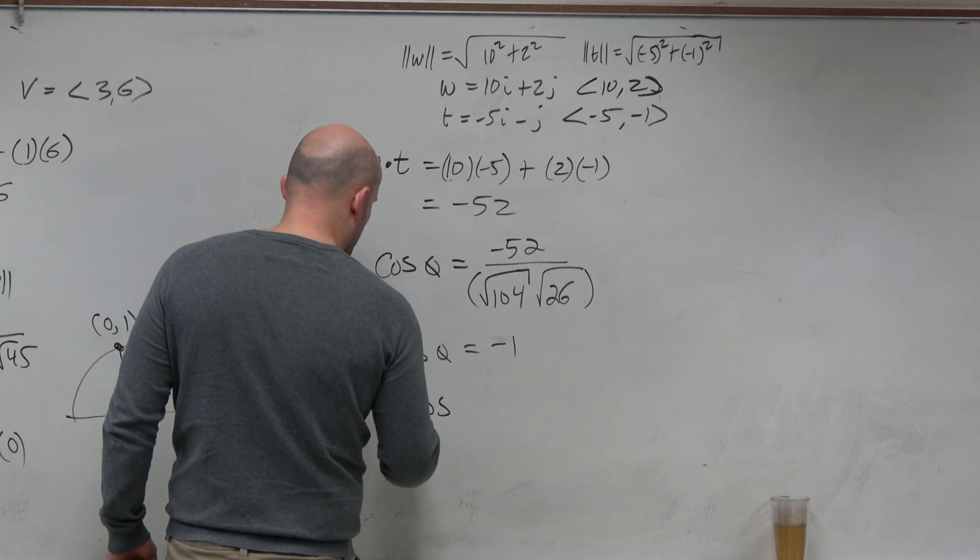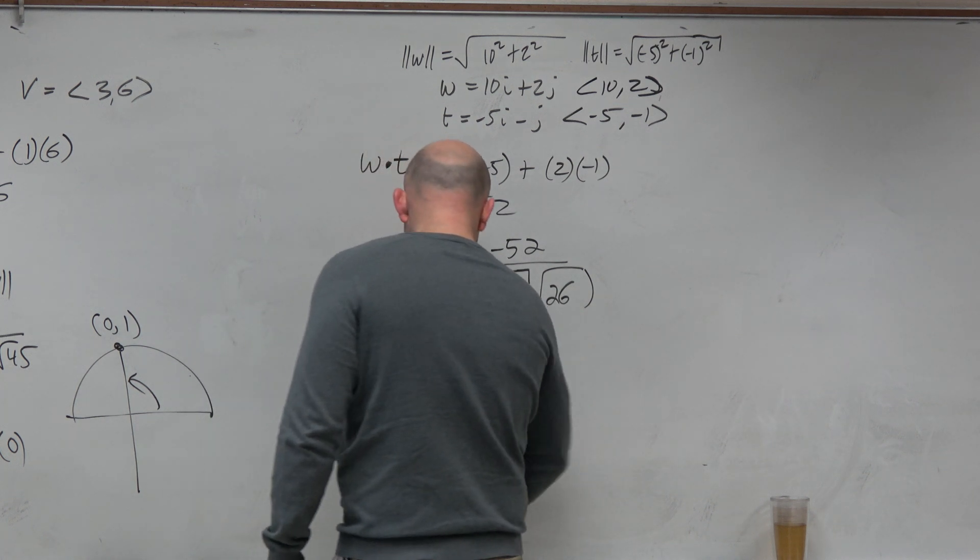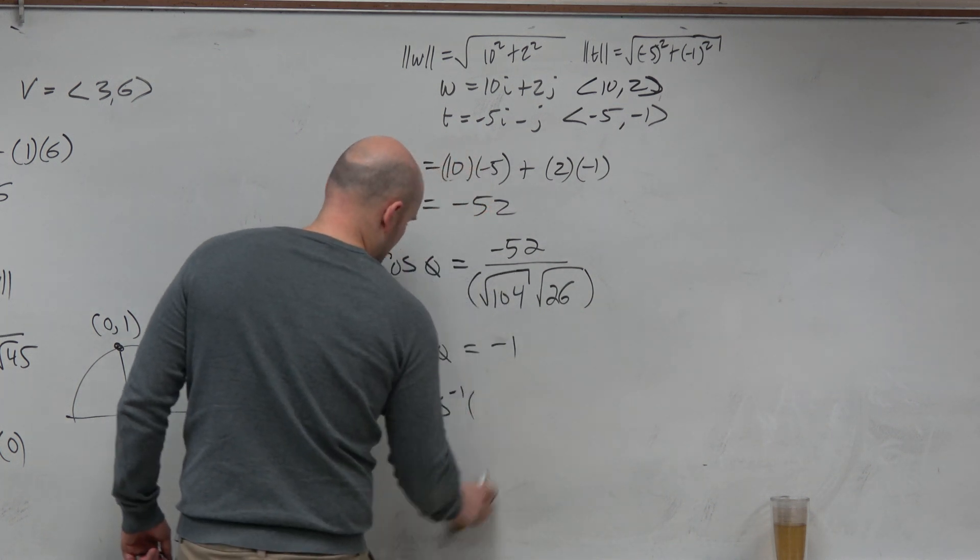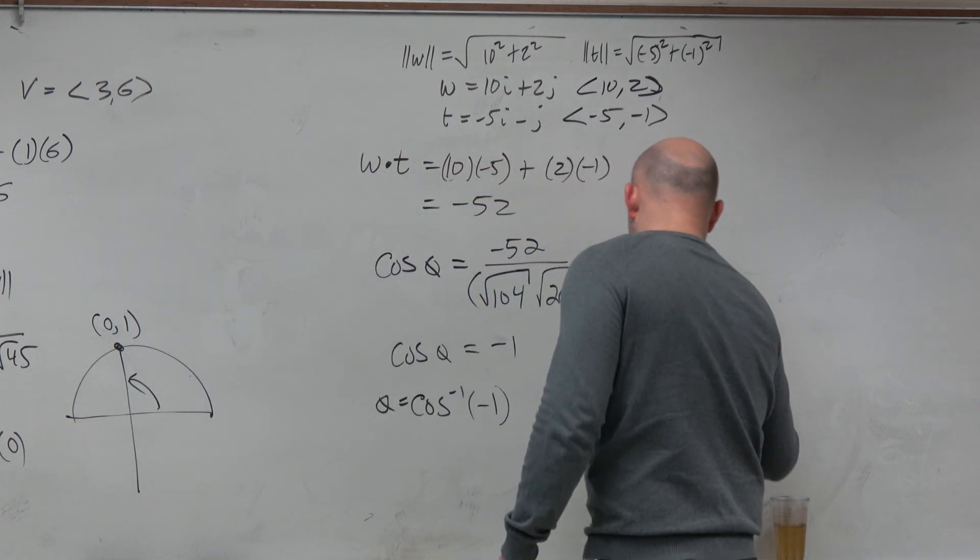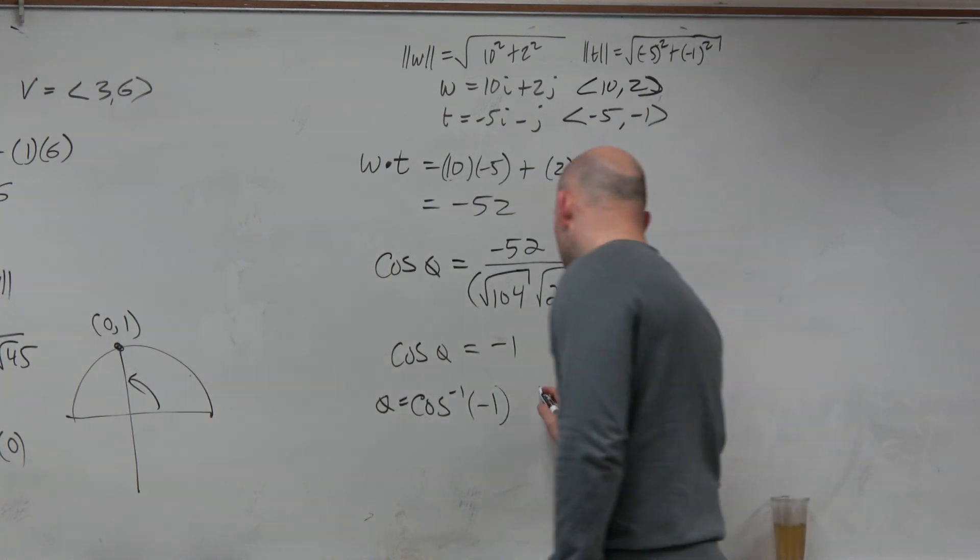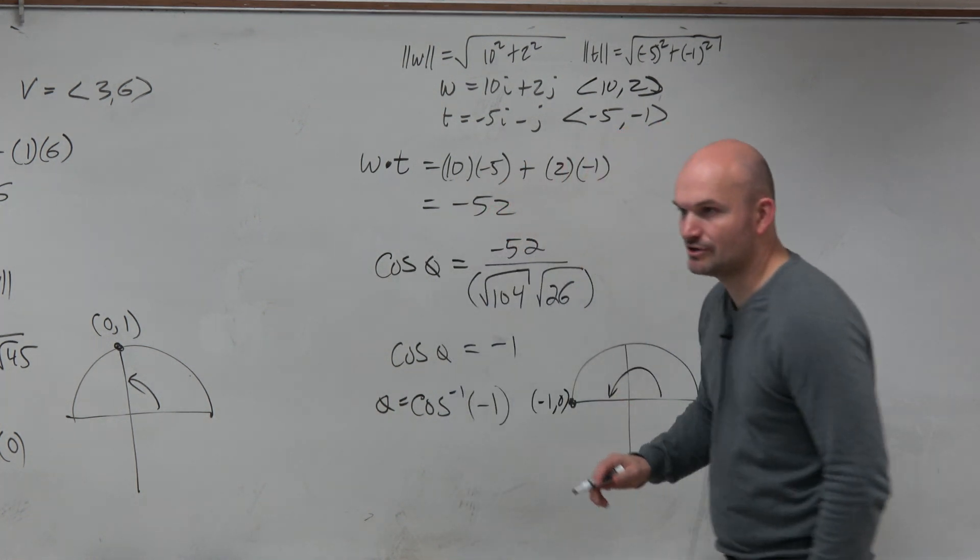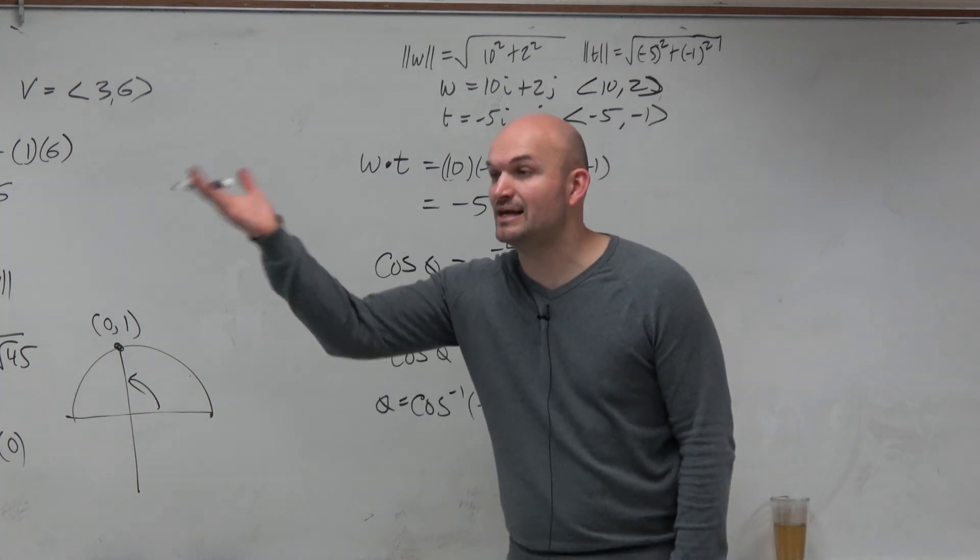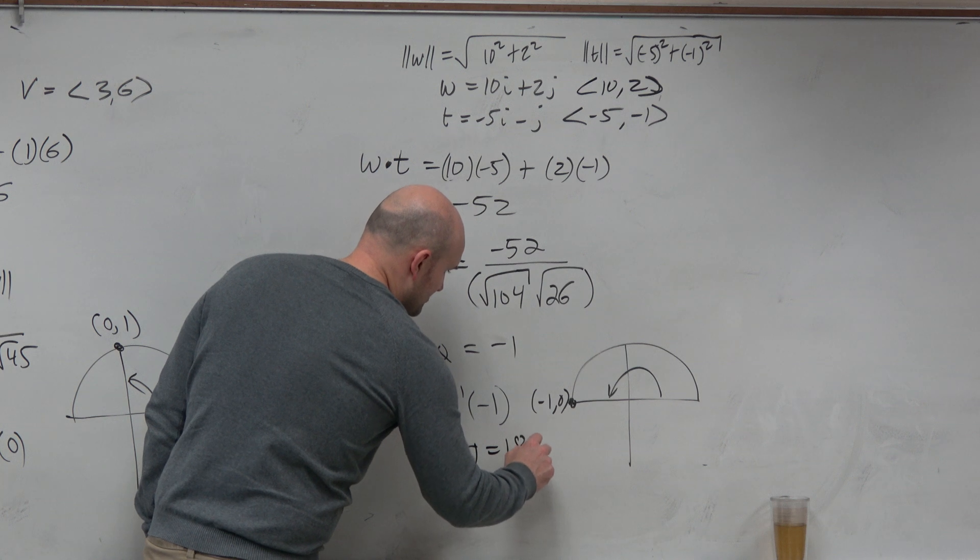You could do cosine inverse of negative 1. But hopefully you guys just remember from the circle, what angle is when x is equal to negative 1? Yeah. In terms of degrees, it's going to be 180. So therefore, that tells us it's parallel.